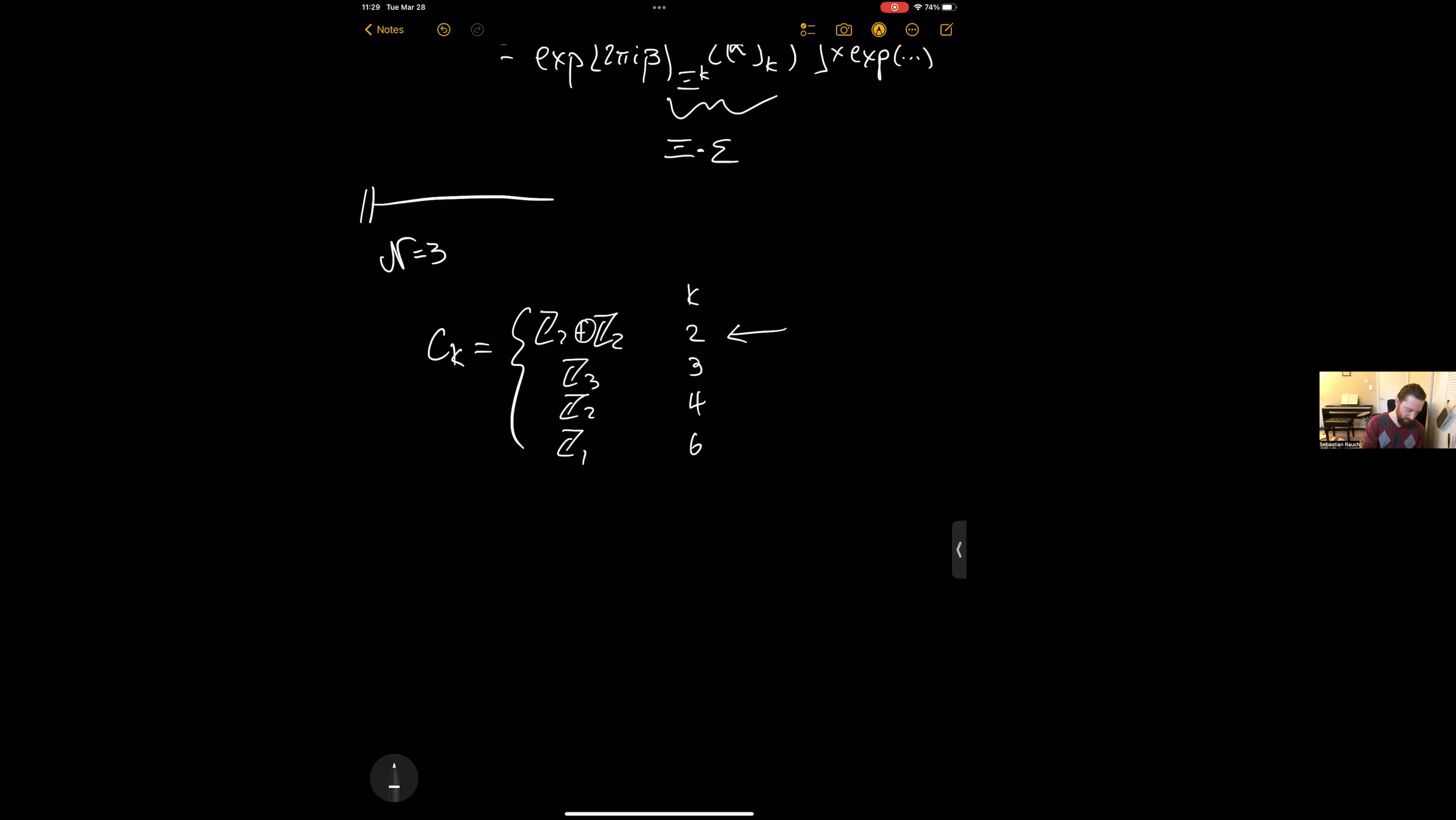And so then with this information we can compute the pairing between string type objects and reduced five brane objects. So these are five branes reduced over cycles of the S5 mod ZK so that they are also strings in the bulk. In this way we're computing one form symmetries.